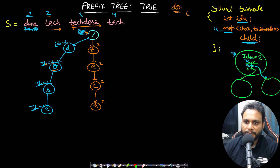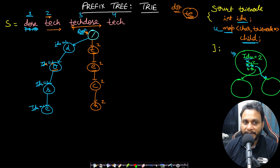Let's say we have just three words: 'dose,' 'tech,' and 'techdose.' If somebody gives me a search word 'te,' I will search from the root node: 't' then 'e,' stop there, and return the answer as 2 — meaning 'te' occurs as a prefix in the word at index 2, which is actually the leftmost index. At index 3 it is also present, but it is not the leftmost word, so I will not overwrite. This is why I must not overwrite when a node already exists.